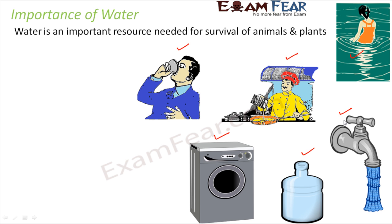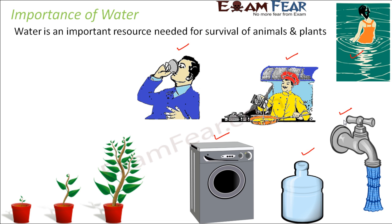This is true not only for human beings but for other animals and plants as well. If you stop watering the plants in your garden for two or three days, the plant starts drying up and eventually dies. So water is extremely essential for the survival, growth, and development of plants. Since water is so important, it is very important to take care of water bodies like lakes, rivers, oceans, and ponds, because those are our sources of water.